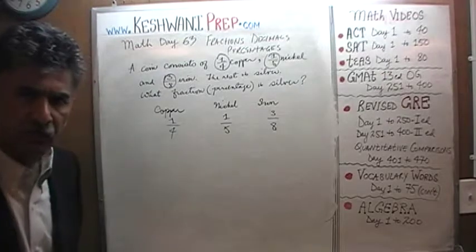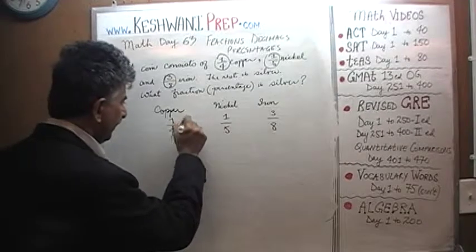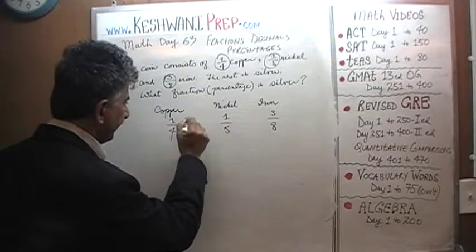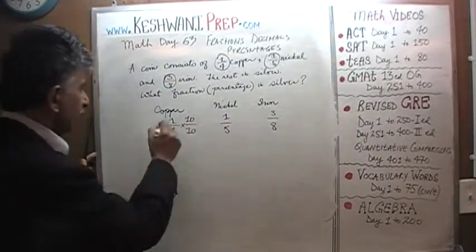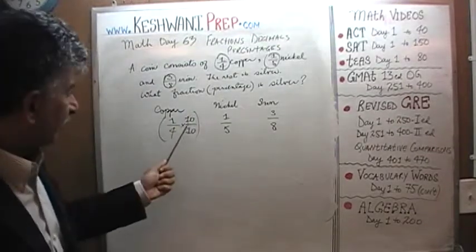How do we convert this one fourth into 40 at the bottom? It's very simple. Multiply top and bottom by 10. In other words, we have taken one quarter and multiplied it by 1, which takes the form of 10 over 10.